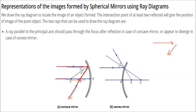In the case of a convex mirror, when a parallel ray hits, it appears to diverge. For the concave mirror, the ray parallel to the principal axis passes through focus. For the convex mirror, if we extend the reflected ray backward, it appears to pass through focus. Here it appears to pass through focus; for the concave mirror it actually passes through focus. This is because angle of incidence equals angle of reflection.